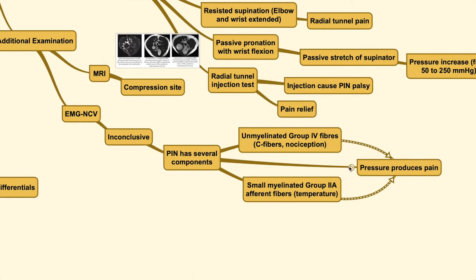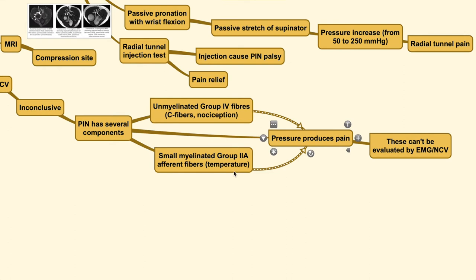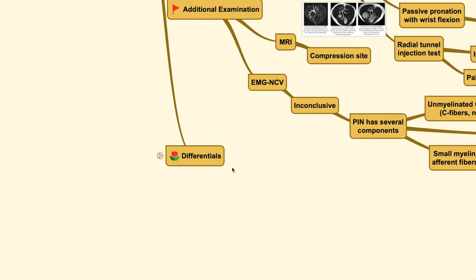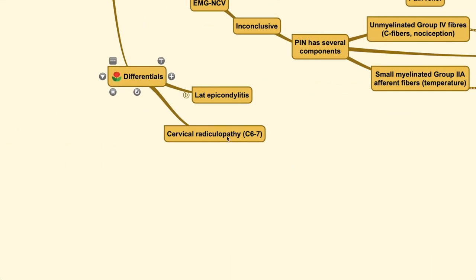PIN has several components within it. It may have unmyelinated group C fibers, which carry signals for nociception, and there are also small myelinated fibers that carry temperature information. Pressure on the PIN will produce pain. However, these fibers cannot be readily evaluated by EMG-NCV, and therefore the result may sometimes be inconclusive.